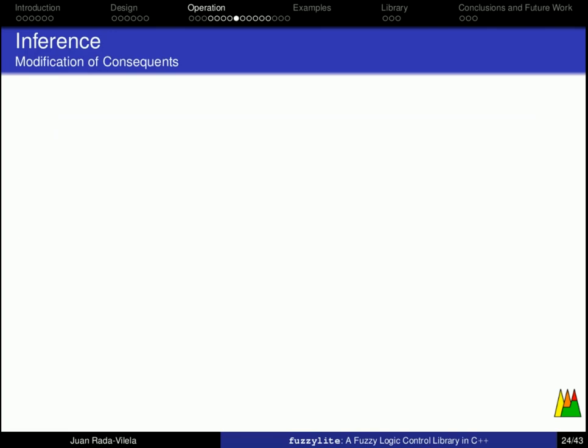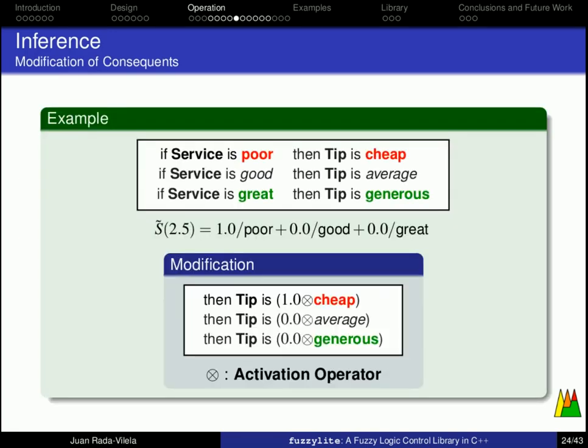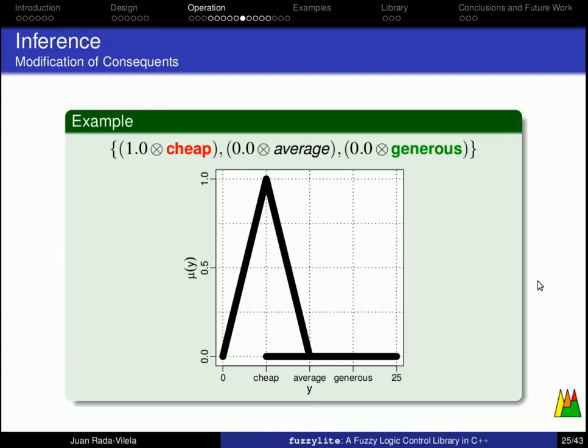The next step is the modification of the consequence. So, using the activation degrees we have computed before, we multiply them with the linguistic terms in each of the consequence, using an activation operator, which is some sort of fuzzy multiplication, if you will, but it is formally known as a t-norm. For example, if we multiply 1.0 with the linguistic term cheap, we get the linguistic term exactly as it is, whereas as we multiply 0.0 times average, we get nothing, and 0.0 times generous, we get nothing either.